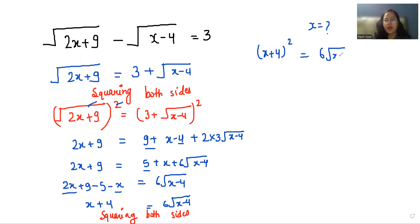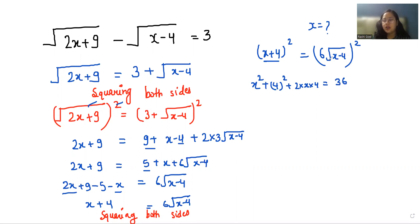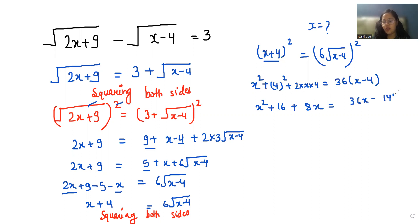Now again I'm doing squaring on both sides, so it becomes (x + 4)² equals (6√(x - 4))². Here again we use the identity (a + b)² = a² + 2ab + b². 6² is 36, and with the help of this square the square root eliminates, giving 36 times (x - 4).